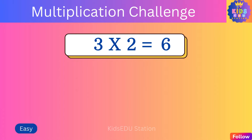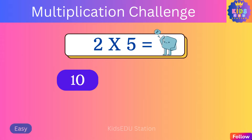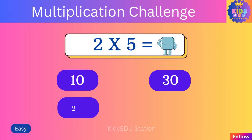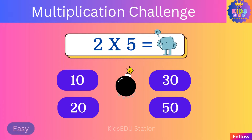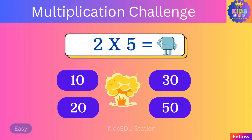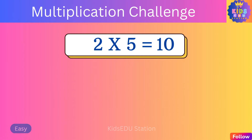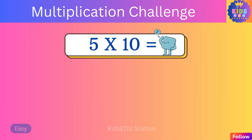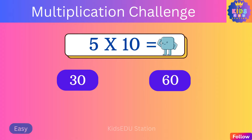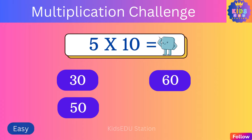Three times two is six. What is two times five? Ten, thirty, twenty, fifty.